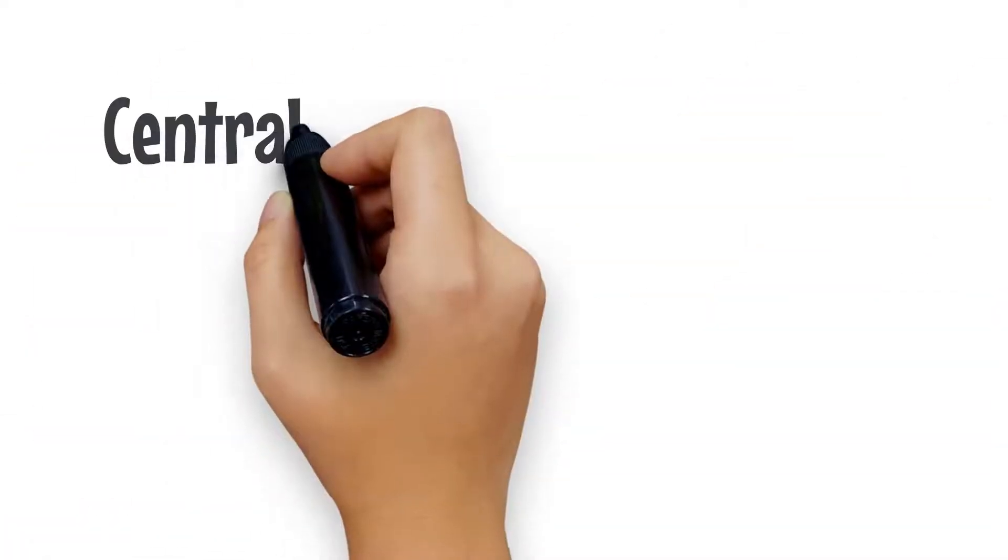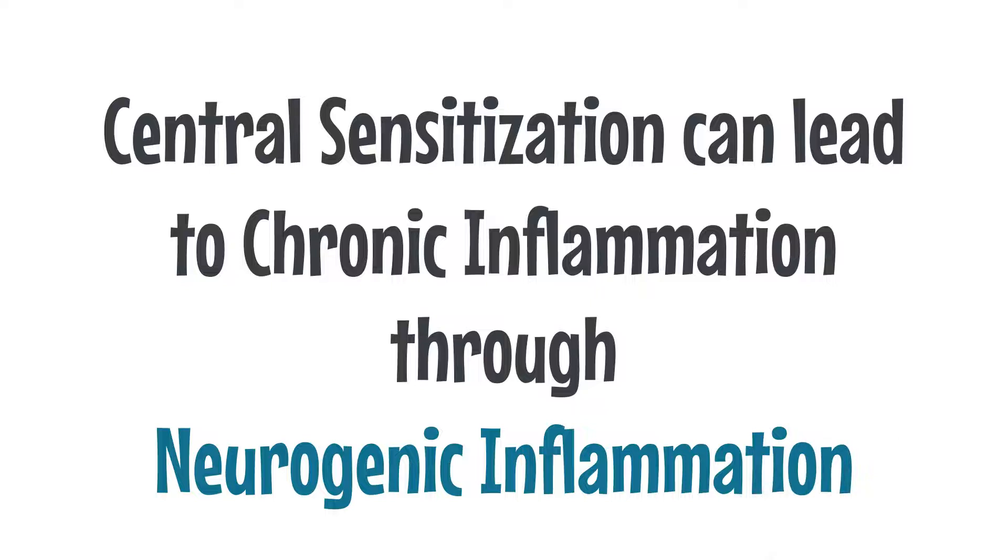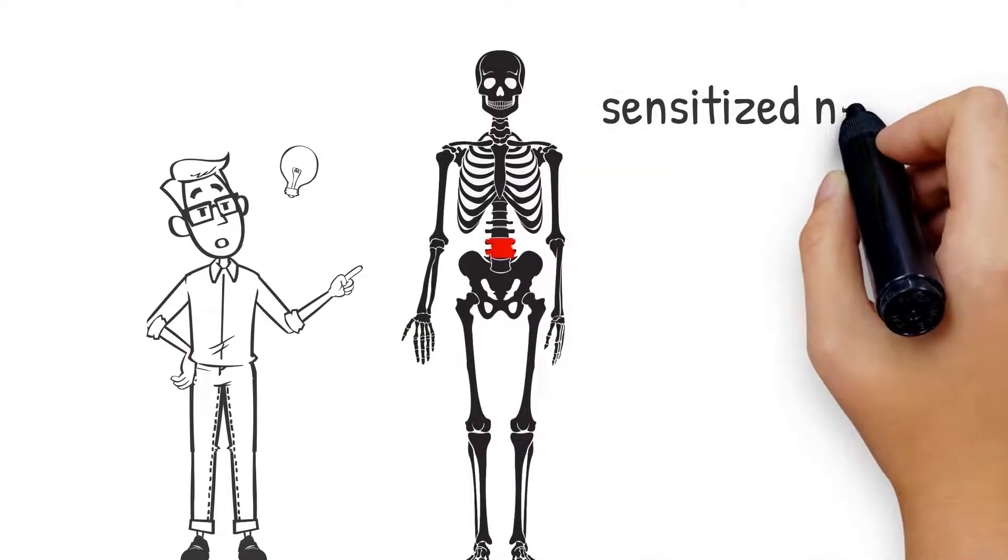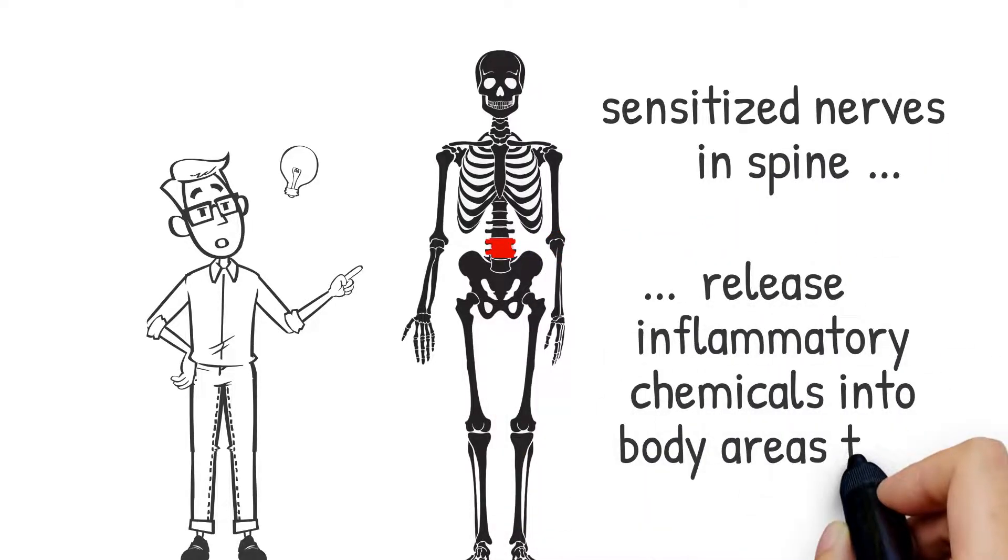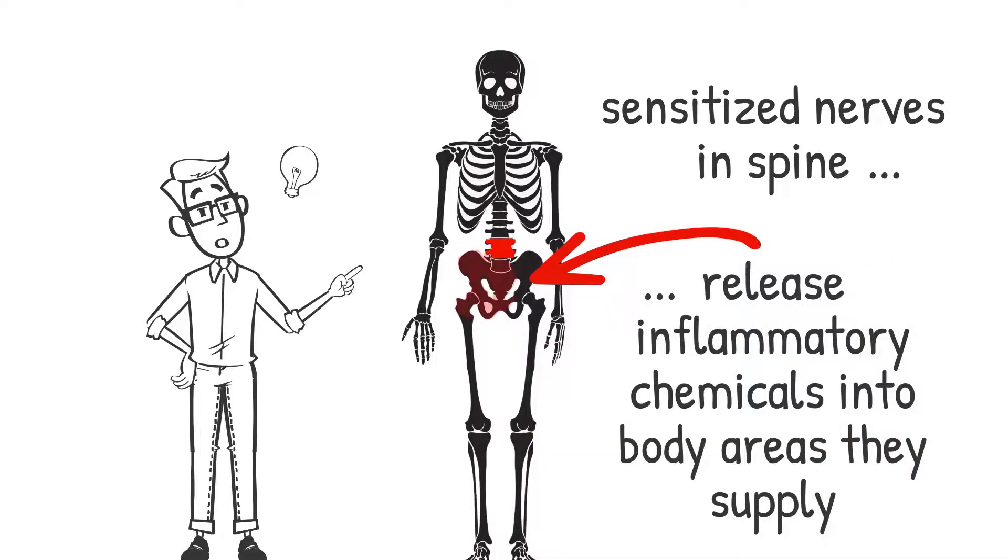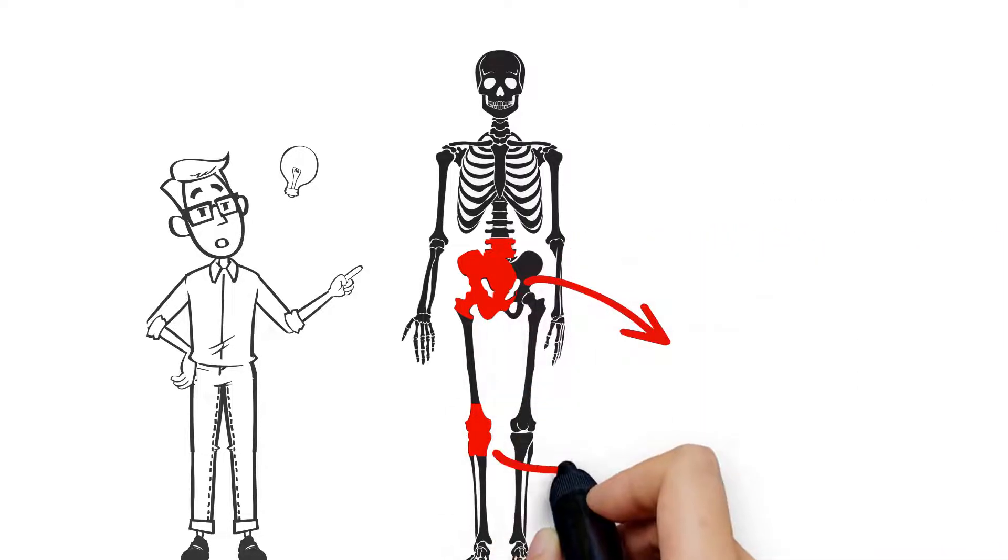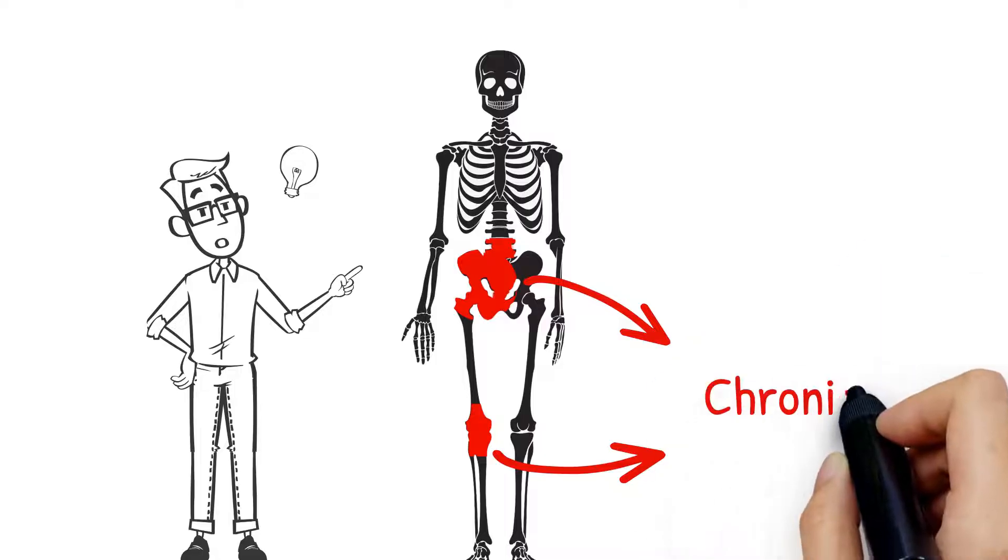Central sensitization can also lead to a state of chronic inflammation through a process known as neurogenic inflammation. Neurogenic inflammation often results from sensitized nerves, which release inflammatory chemicals into the peripheral muscles that they supply. This process can even spread to muscles that were not originally injured if the nerves supplying these muscles are linked to the original sensitized neurons. These inflammatory chemicals can then activate pain signals within the muscles that they're released in, contributing to the development of chronic pain.